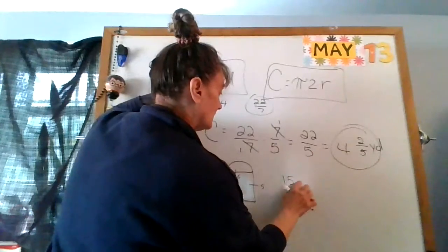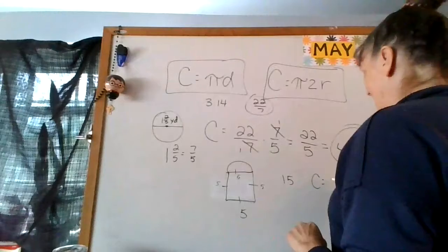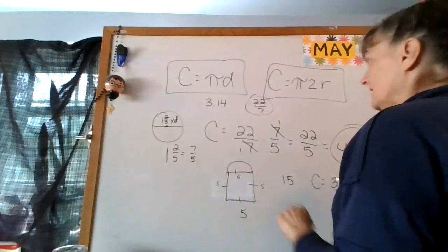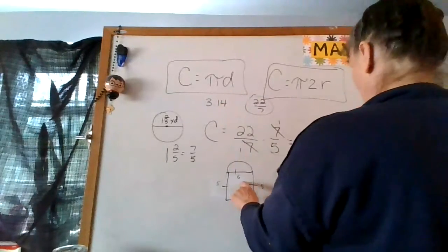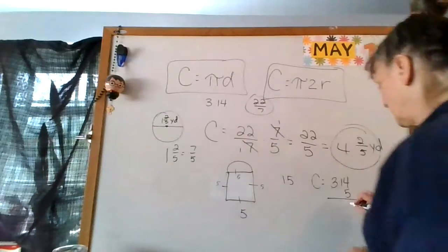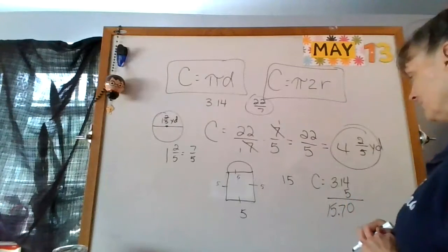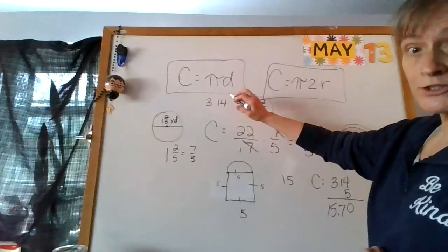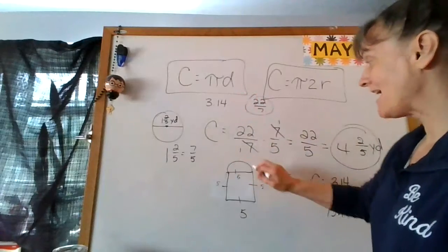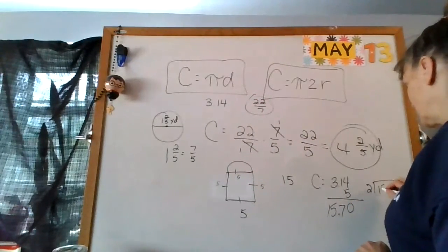I know my diameter because it goes all the way across, that's 5. So I'm going to do, let's find that circumference first. That would be pi, 3.14, times the diameter which is 5. 5 times 4 is 20, so I get 15.70. But then it's not a whole circle, is it? It's a half circle, so I'm going to divide that by 2.